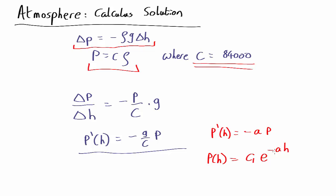So what we need to do is work out what a is and what the constant C1 is. By comparing this equation and that equation, we can see that a equals g over C, which has a numerical value of 1.2 times 10 to the minus 4.